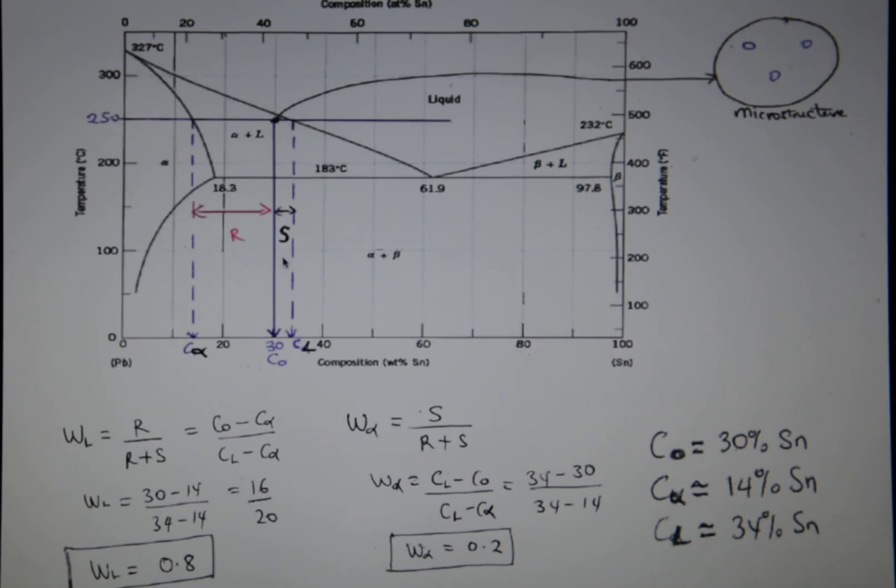Now to find the weight fraction of alpha present within the microstructure, you use this value here, which is S. So S over R plus S will give you W alpha, which is this here.